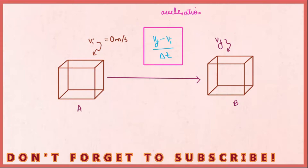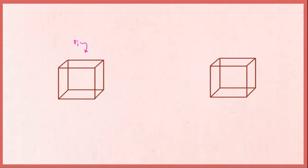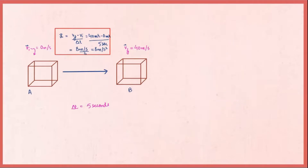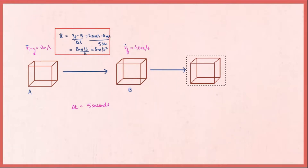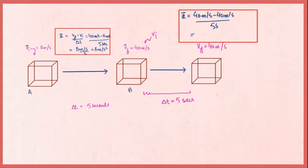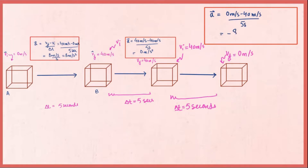Let's work with some numbers before defining angular acceleration. Suppose a box is at rest and moves to point B with velocity 40 meters per second in a time interval of 5 seconds. Then acceleration equals 40 minus 0 over 5 seconds, which is 8 meters per second squared. If the body moves at a constant 40 meters per second from point B to point C in 5 seconds, acceleration is zero. If the box then decelerates from point C to point D, stopping in 5 seconds, the acceleration is minus 8 meters per second squared.